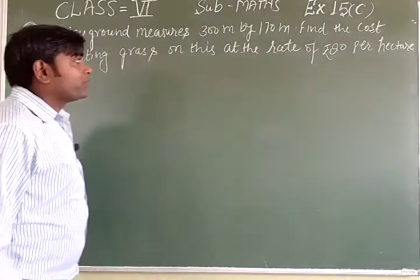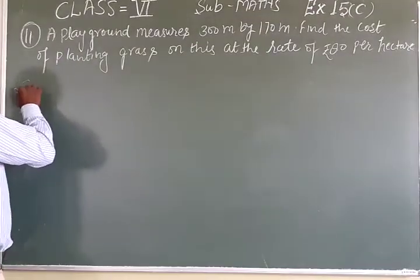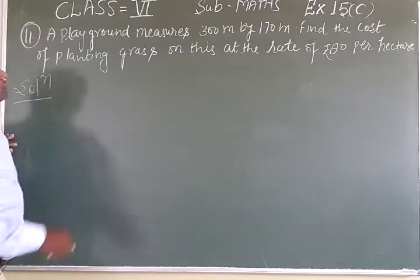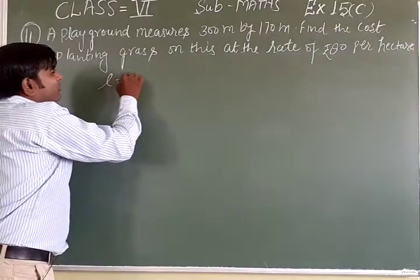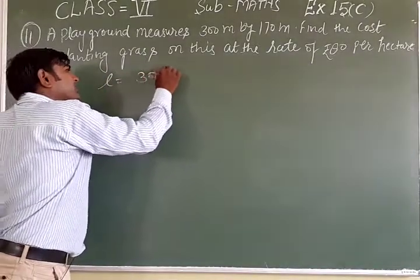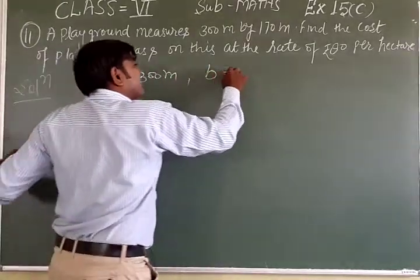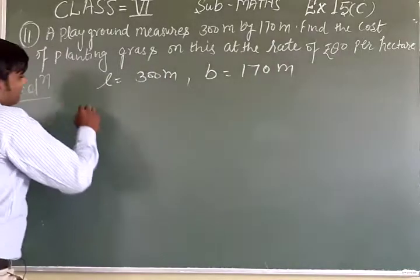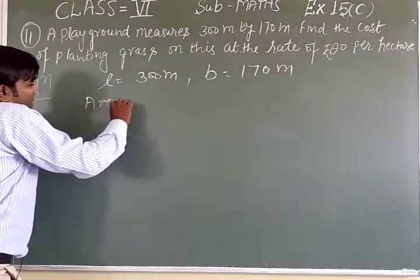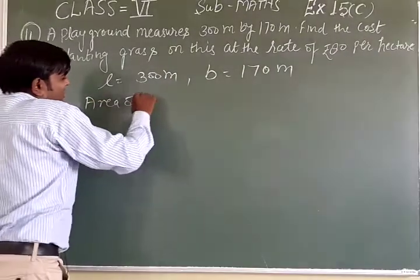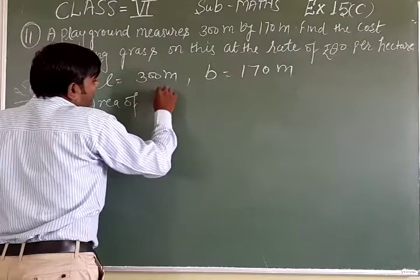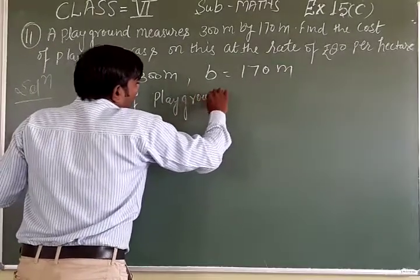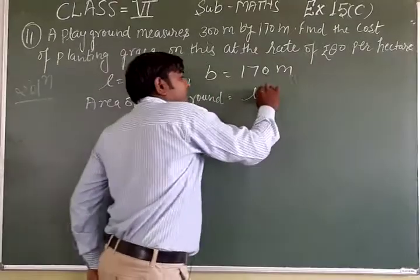80 rupees per hectare. I am going to tell you the solution. The length is equal to 300 meters and the breadth is 170 meters. Area of playground is equal to L into B.